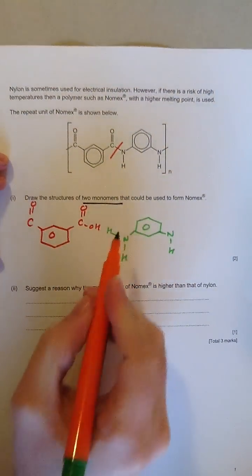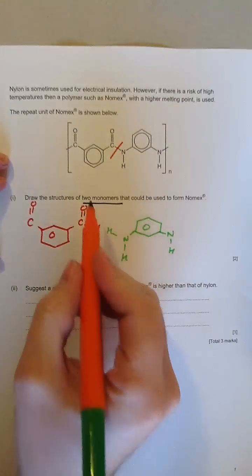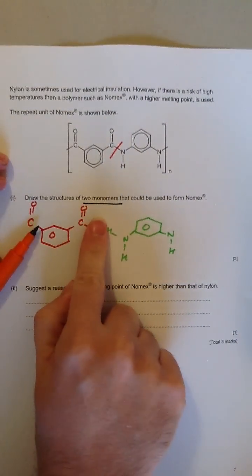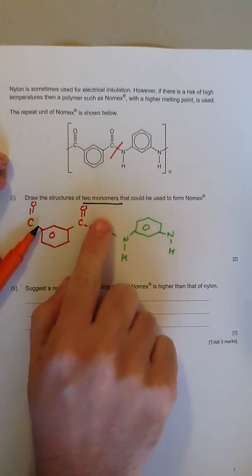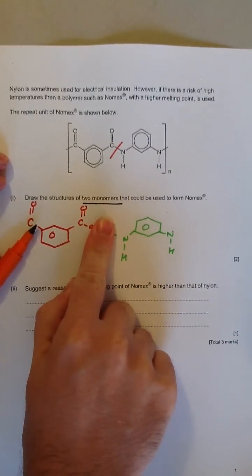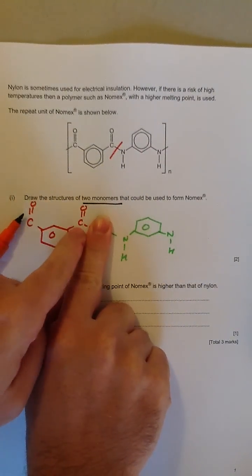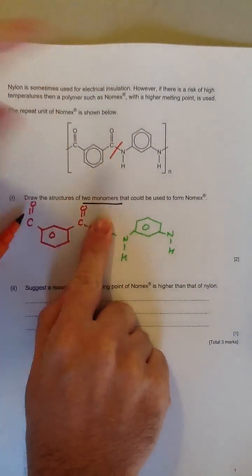So if we start from a carboxylic acid and an amine, when these two monomers come together, they would lose water. They would lose that OH and that H, and when they would come together, they would form a bond between that carbon and that nitrogen, and that would give you a polymer.